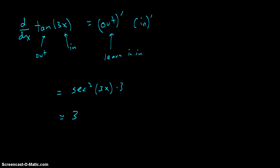Which just looks a little bit nicer to put the numerical coefficient in front. 3 times secant squared of 3x. So 3 times secant squared of 3x.